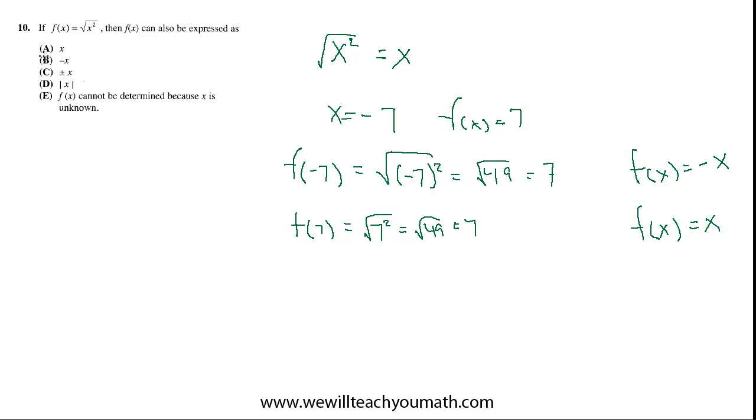So, because a and b don't cover all the possibilities, we actually have to throw them both away. Because we want to be able to express f(x) in a way that's always going to be true. So, then c starts to become interesting. Could it be plus or minus x? But I think the problem with that is that it's changing what you put in here. If you put in negative 7, you get out 7, so it's switching the sign. But if you put in positive 7, it's not switching it. So, putting plus or minus x means that there would be two solutions. And there really aren't two solutions. So, I don't really like c.